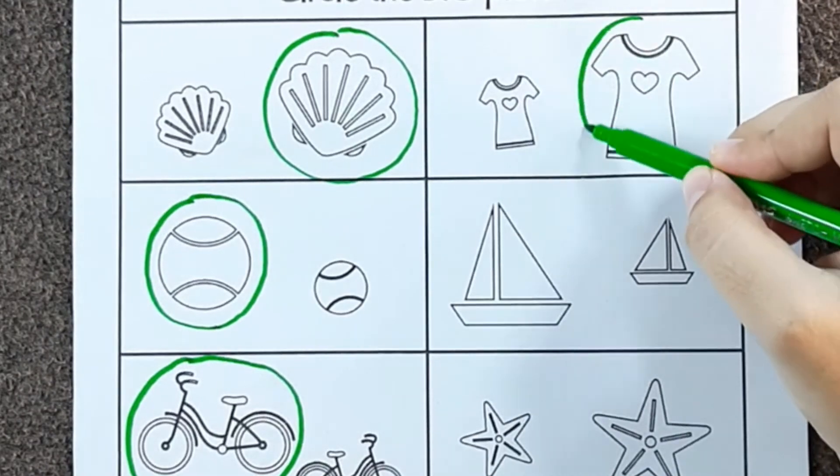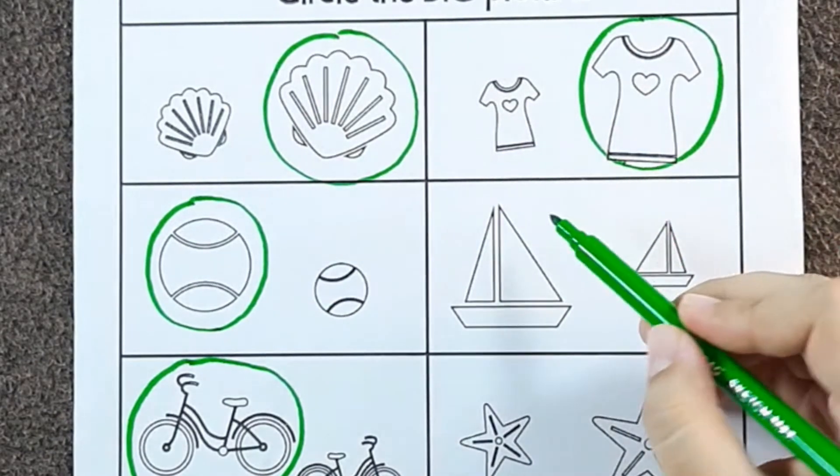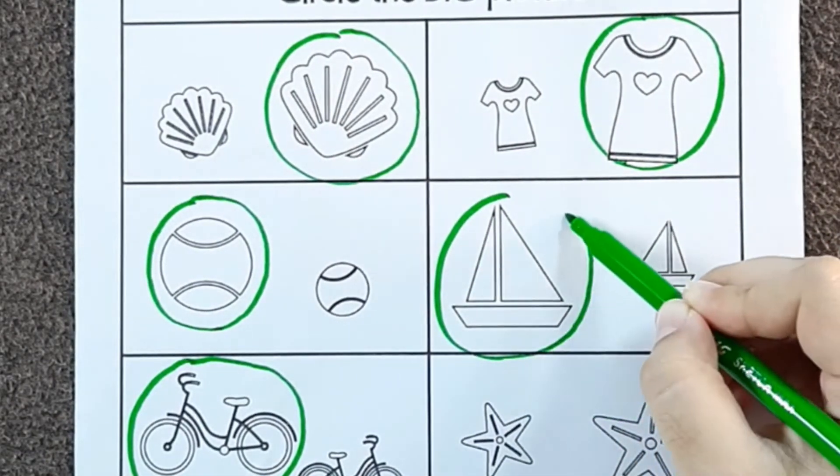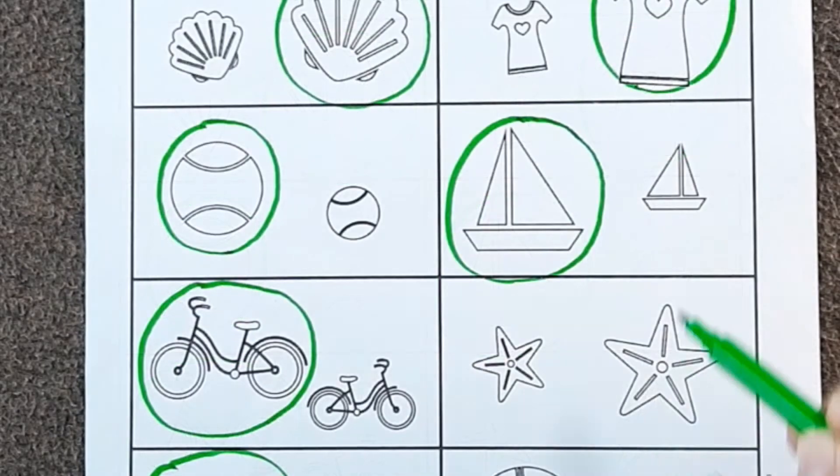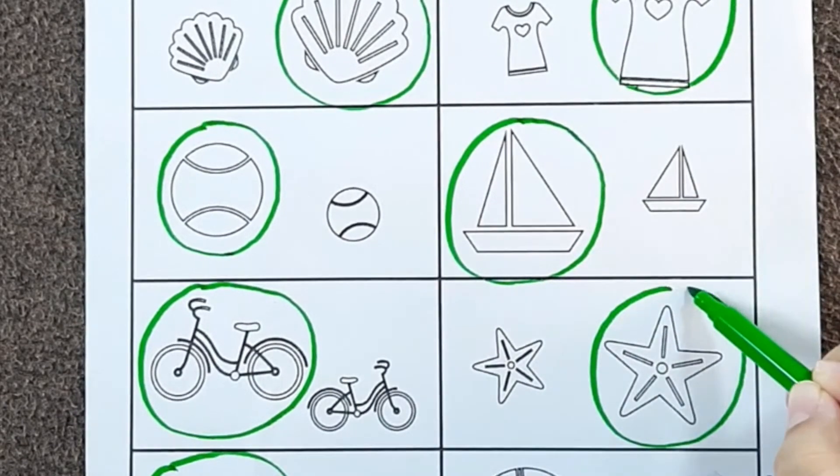This dress is bigger than this. You have to circle the bigger object. So you can solve such worksheets at your home.